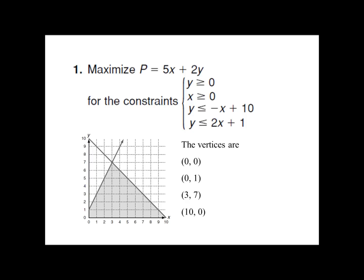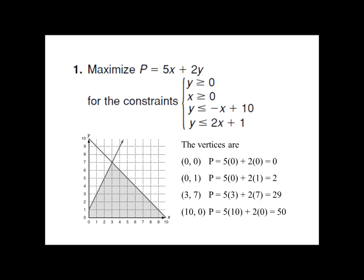I need to plug these x and y values into the objective function and see which one maximizes it. It's not always just going to be the one with the biggest number — it depends on what the objective function is. So we have to plug every single point into that equation. We find out that p equals 0, p equals 2, p equals 29, or p equals 50. If we're trying to maximize it, 50 is our biggest one. So the answer to the problem — they say maximize this equation — our answer is 50 itself.